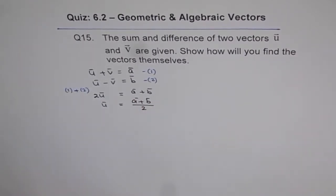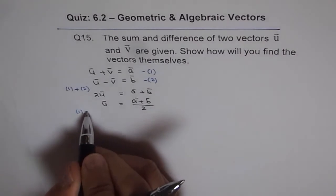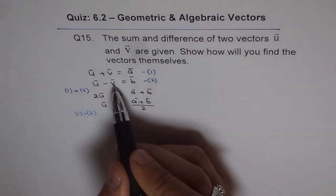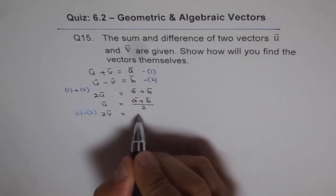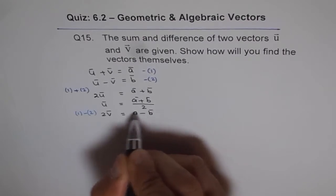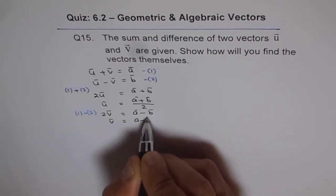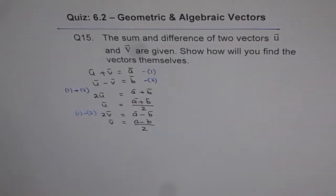So I get the vector u in terms of a and b. Similarly, if I do equation one minus equation two, then if I take away equation two from one, I get 2v equals a minus b. And so v equals a minus b over two. That is my result and that is how I can find the vectors themselves if I am given their sum and difference.